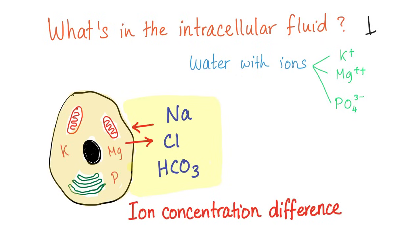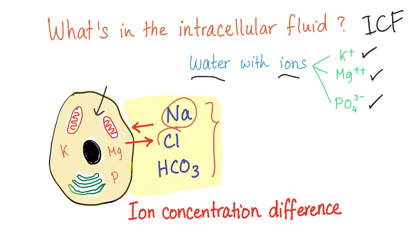Let's turn our attention to the intracellular fluid. What's inside the cell? Water with ions — but different types of ions. You have potassium, magnesium, and phosphate ions. This is different from the extracellular fluid, which has sodium, chloride, and bicarbonate. I'm not saying sodium is never found in the cell — it's just more common outside. By the same token, potassium can be found outside the cell, it's just more common intracellularly. These ions keep flowing in and out and are regulated. We call this ion concentration difference.